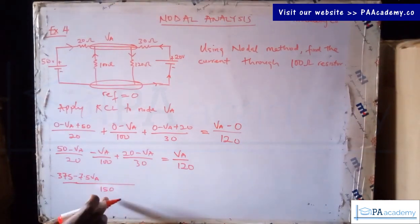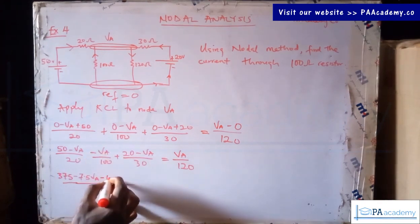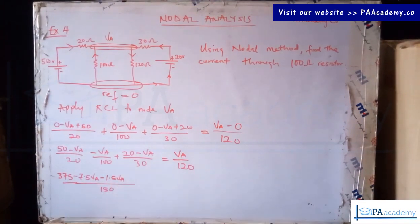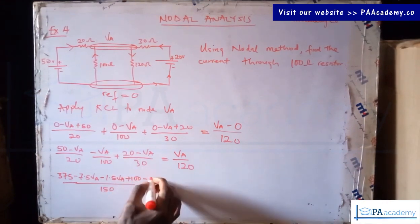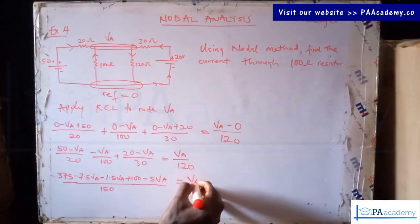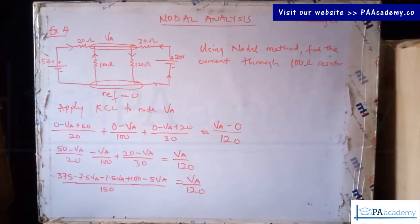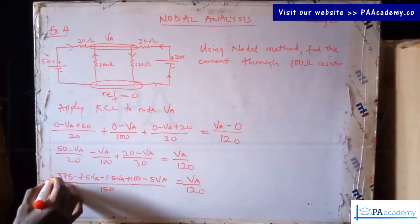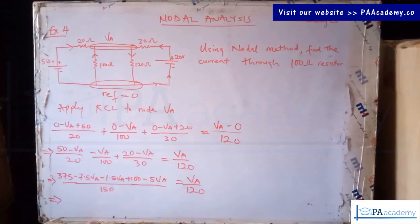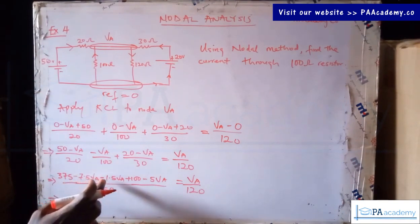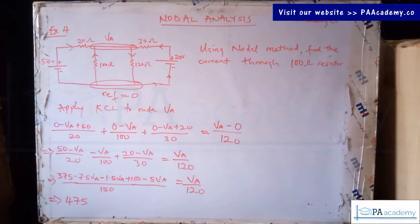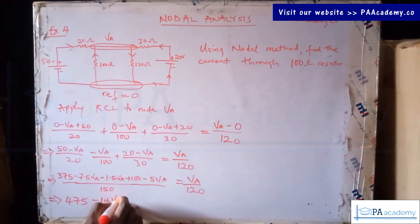Continuing: 150/30 = 5, so 5 × 20 = 100 and 5 × (−VA) = −5VA. On the right-hand side, 150/120 reduces — dividing both sides by 30 gives 5 on the left and 4 on the right for that denominator. Collecting constants: 375 + 100 = 475. Collecting VA terms: −7.5VA − 1.5VA − 5VA = −14VA.